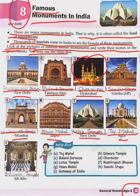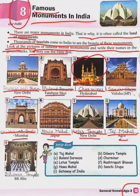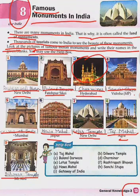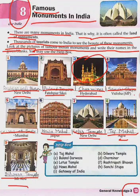Our last monument is Dilwara Temple. The spelling is D-I-L-W-A-R-A, Dilwara, T-E-M-P-L-E, Temple — Dilwara Temple. Dilwara Temple is located in Mount Abu. Thank you.